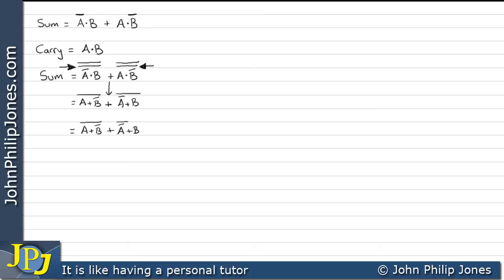We bring that OR down and must change it into a NOR. Writing this out again, we double NOT it — that doesn't affect the functionality — but it gives us a NOR expression because above that OR symbol we now have a bar across, giving us a NOR expression.